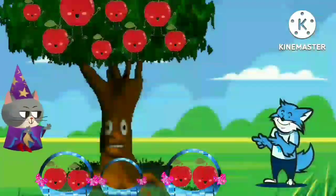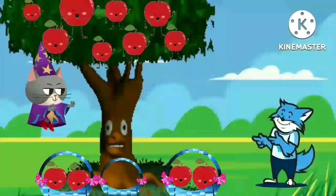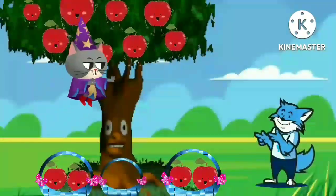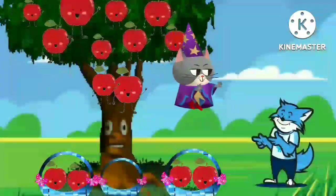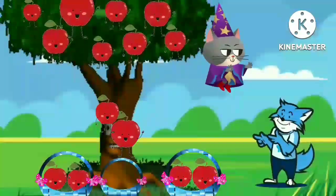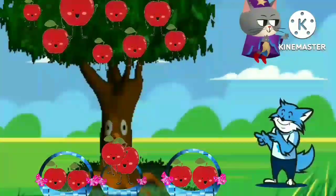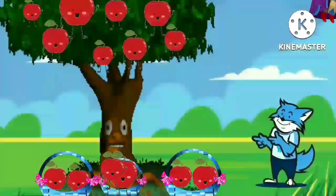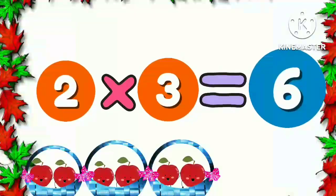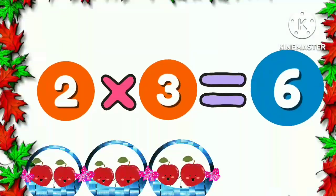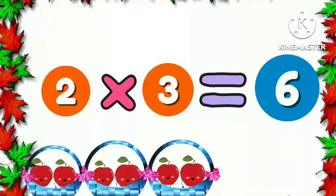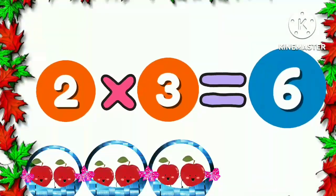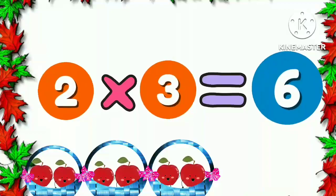Now a magical cat came and cut off two apples. The apples fell into the third basket. Now we have two apples in each three baskets. Two three times is six.